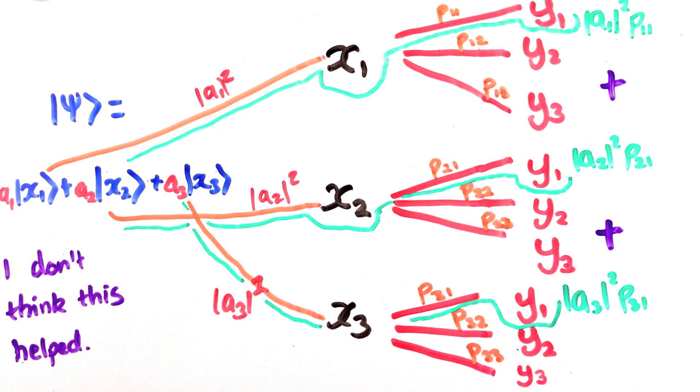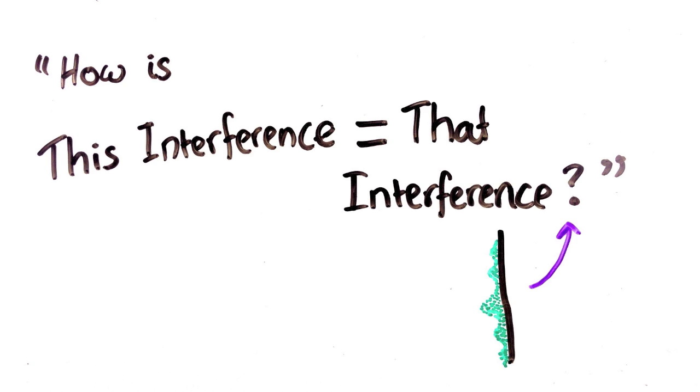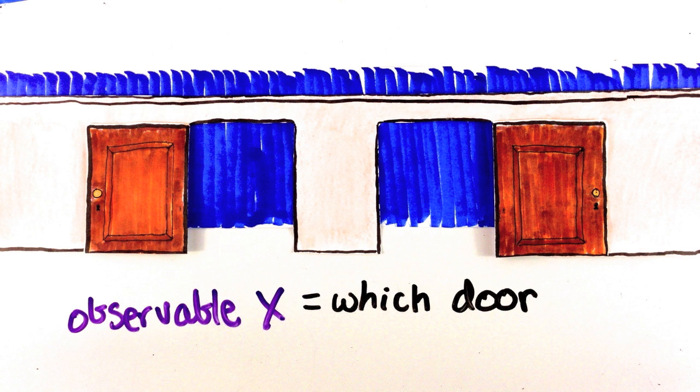Ok, so now we're ready to answer the first homework question. Explain how this interference is the same thing as the interference in the double slit experiment. There are a few ways you can answer this, all valid. But in particular, I want to show why the interference in both cases is the same thing from a completely mathematical standpoint. What is observable x in the double slit experiment? This might surprise you, but it's which door the particle goes through.